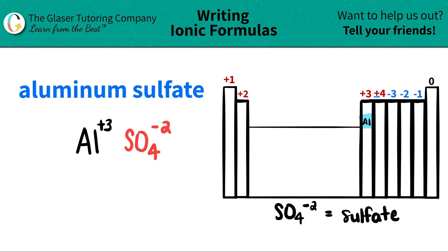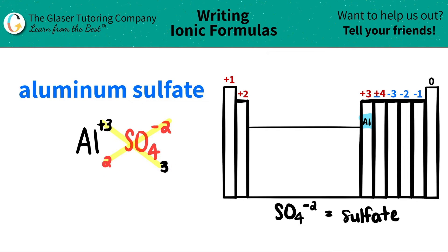Now you have the two components. What we like to do is crisscross these two charges to see how many of each component we need in the formula. So this plus three will crisscross down telling me that I need three sulfates, and this negative two crisscrosses down telling me that I need two aluminums. When you do this crisscrossing, you can scribble them out because we're just focusing on how many of each we need — it's just a counting number.